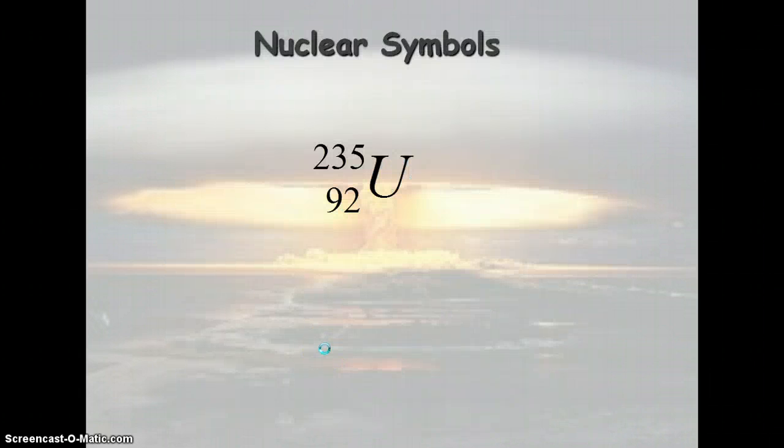Here we have an example of a nuclear symbol. The U is where the element symbol is, so this is the symbol for uranium.